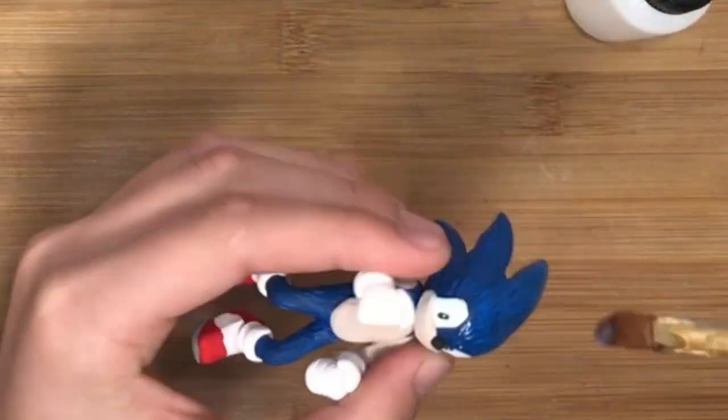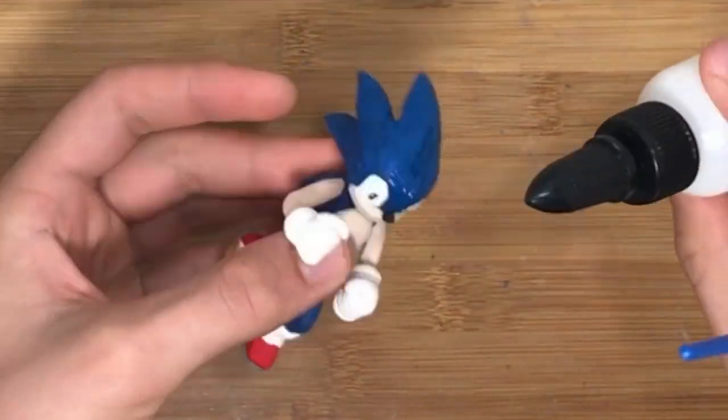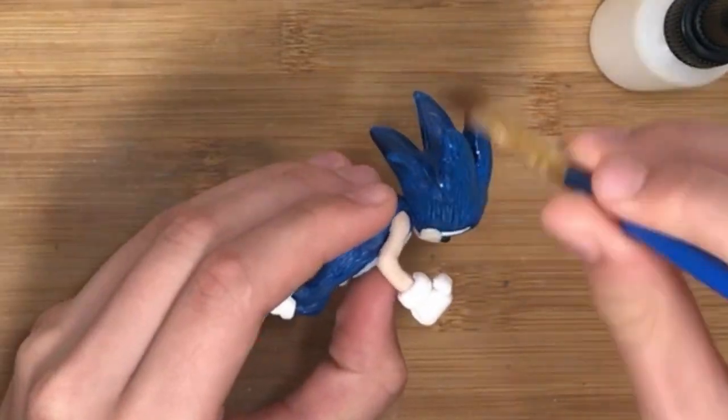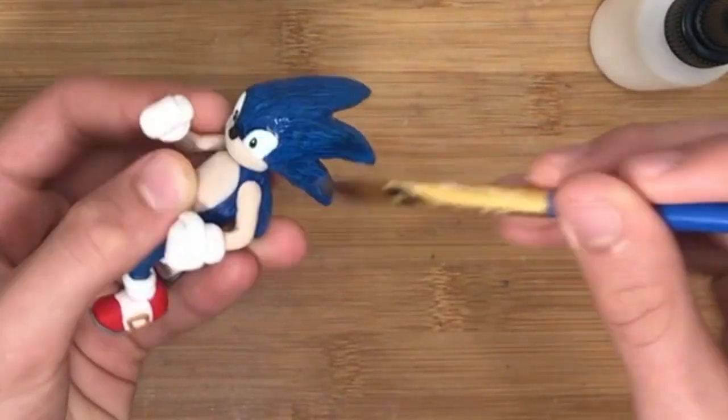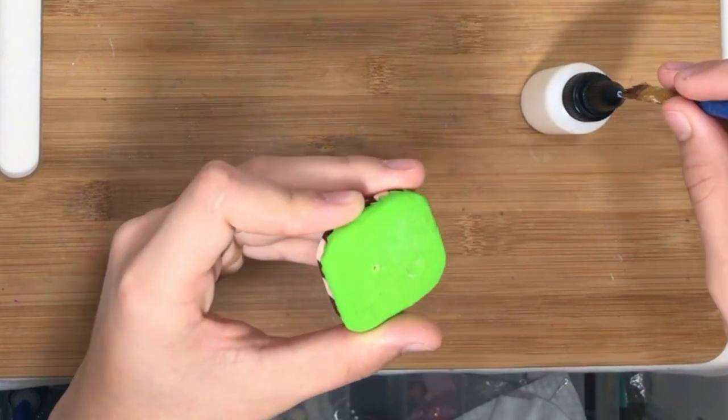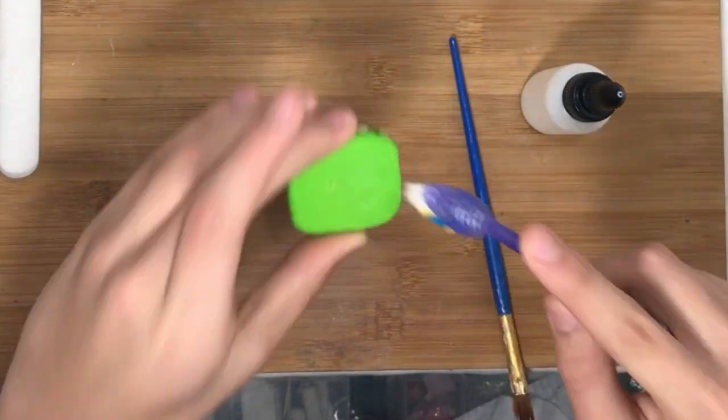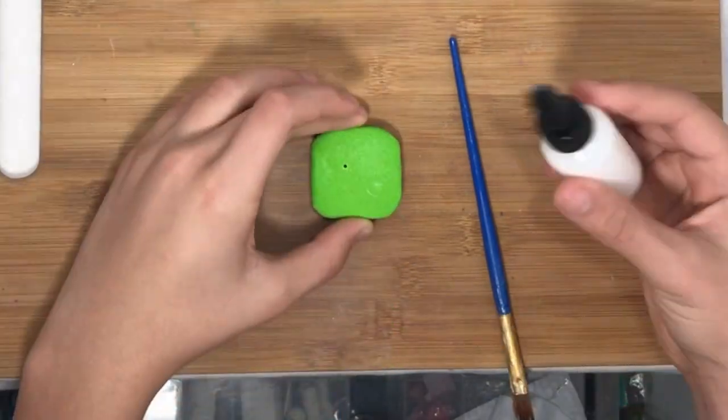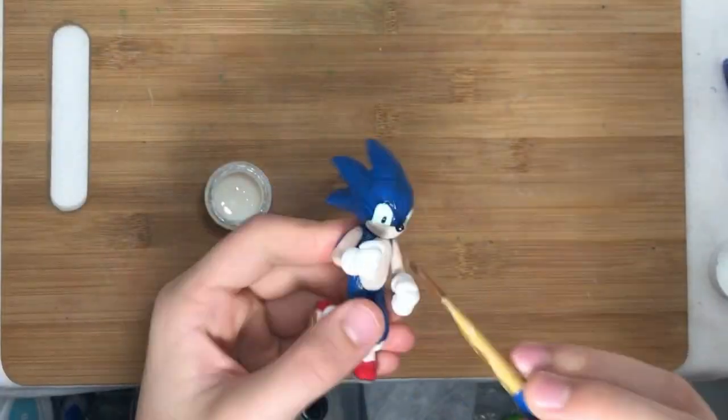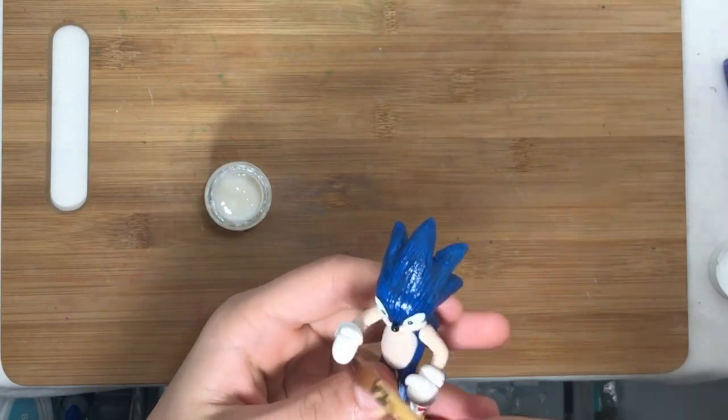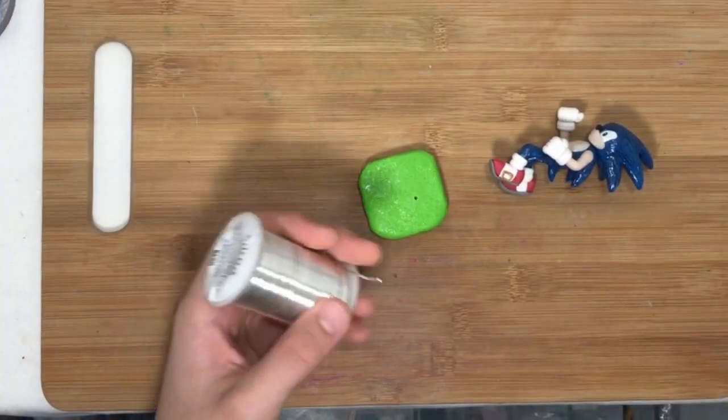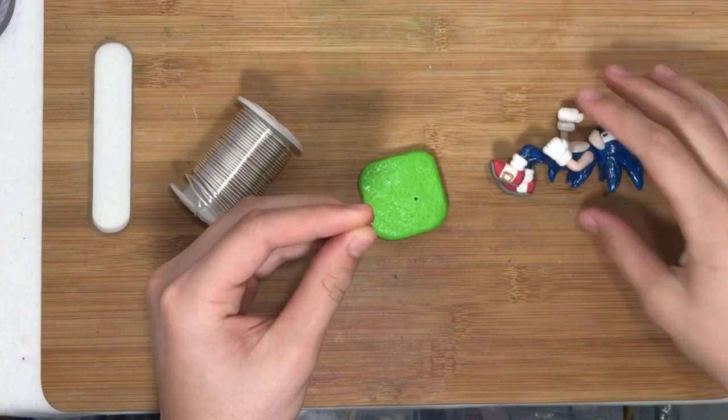Yep, after baking that, just gonna gloss Sonic with gloss, that's Sculpey gloss glaze is the brand I'm using. Adding a little bit to the grass, not too much, just using the toothbrush to get deeper in there. Well, I put a little bit too much on that time. Now using some satin glaze for his gloves, arms, and boots since those are not shiny.